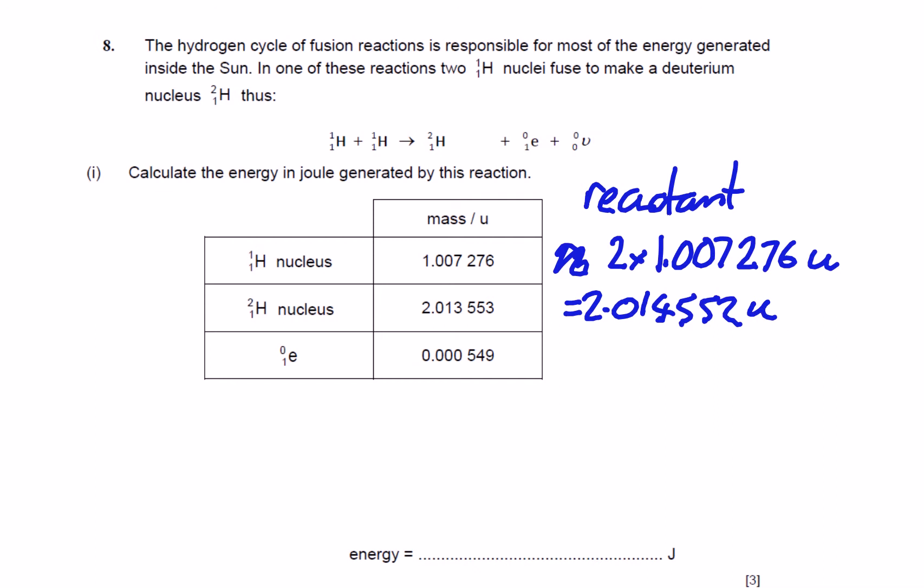And then the product mass is given by the mass of the deuterium nucleus, which is 2.013553, plus a positron, which of course is an anti-electron, so we need to add on the mass of that, which is 0.000549u, and that comes out as being 2.014102 atomic mass units.